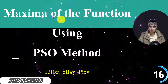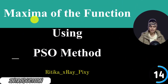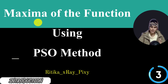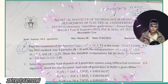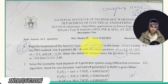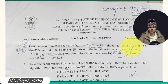In this video we will find out the maxima, that is the maximum value of any function, using PSO method - Particle Swarm Optimization. We are using the PSO method to find the maximum value of any objective function. Here in this question paper, first question: find the maximum of the function f(x) = -x² + 2x + 11 in the range -2 to 2, lower bound -2, upper bound 2, using PSO method.